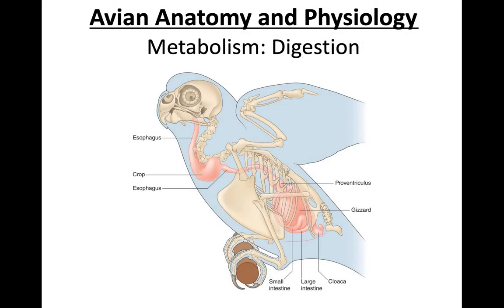This lecture will continue our investigation of avian anatomy and physiology. We're going to look at metabolism in birds — the really high metabolism that they have — and the associated anatomy and physiology required to maintain that high metabolism, starting with the digestive system.